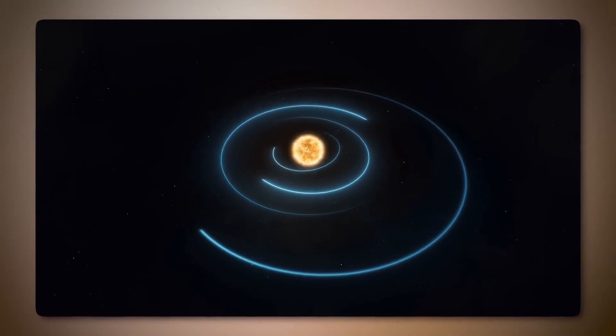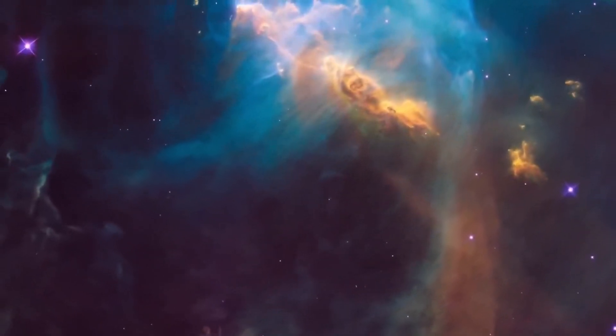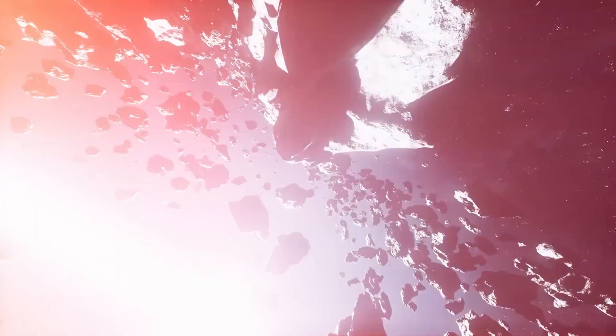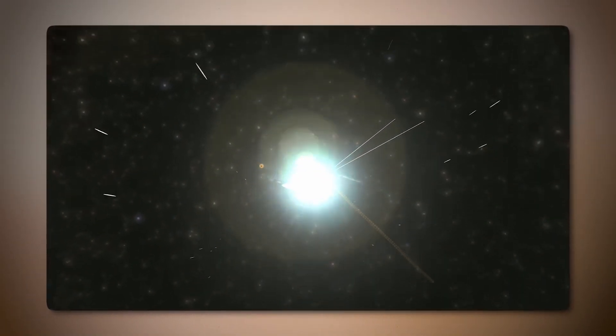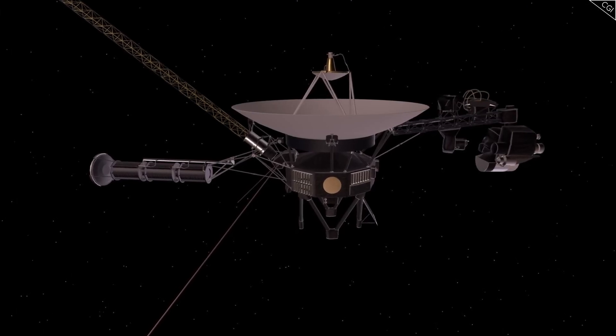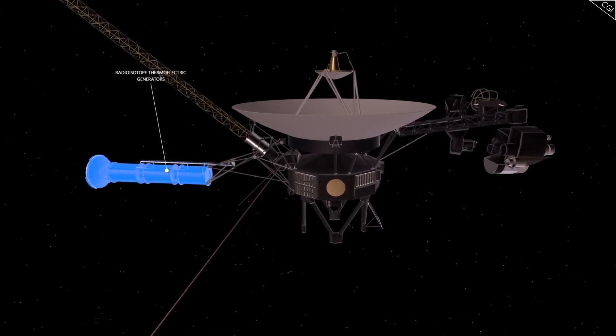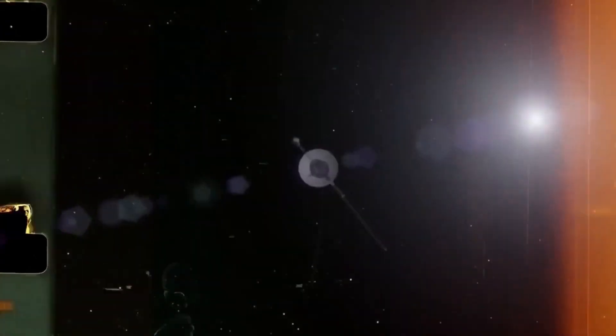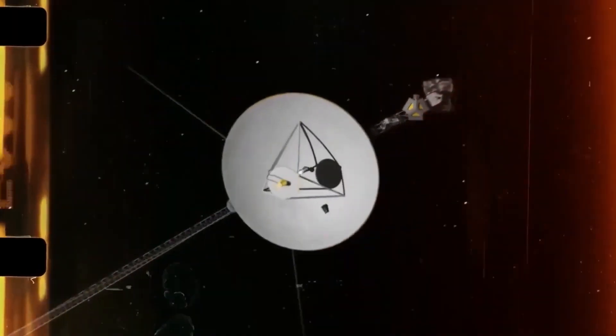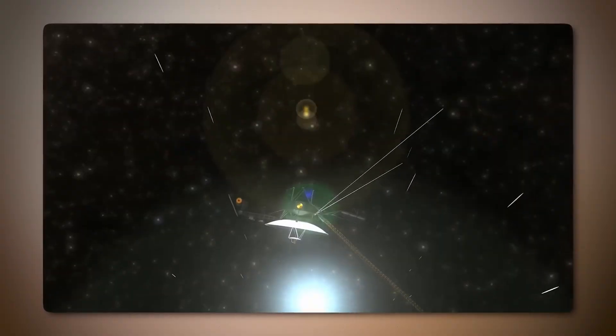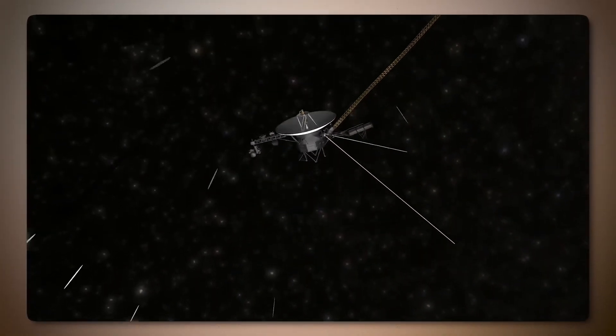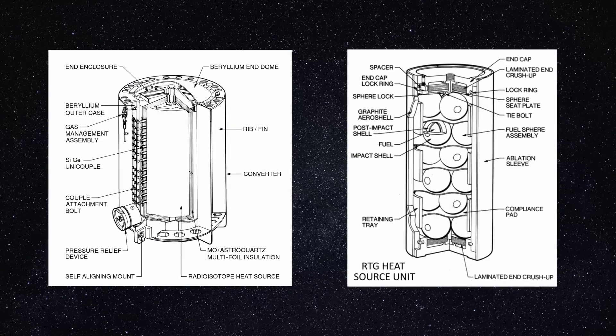To understand Voyager 2's groundbreaking findings, it's essential to first grasp the Sun's dynamic nature. Far from being a tranquil ball of light, the Sun is a star, a blazing nuclear furnace hurtling through the galaxy at approximately 450,000 km per hour. Its surface is a tangled web of magnetic fields driving a continuous flow of electrically charged particles known as the solar wind. This solar wind streams outward in all directions, carrying the Sun's magnetic field across vast distances. Eventually, the solar wind meets the interstellar medium, a region filled with remnants of ancient stellar explosions.